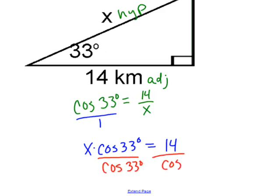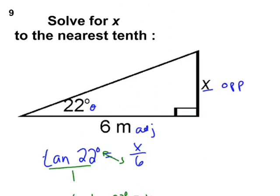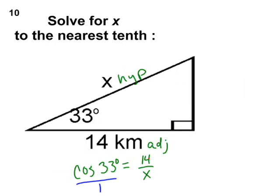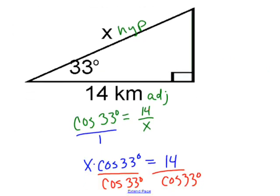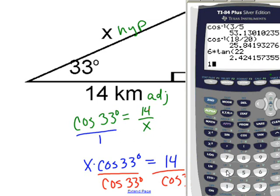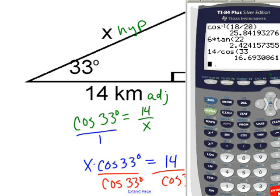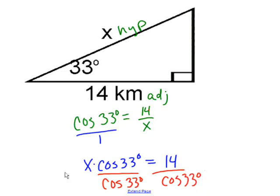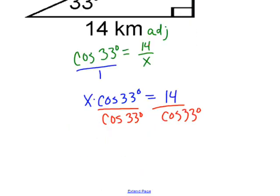After you get the hang of this, most of the time you can just realize that if x is on the bottom, I'm going to take my number and divide it by my trig. And if your variable is on top, you just take your number times your trig. So if I go to my calculator with this one, 14 divided by cosine of 33 equals 16.7, so my answer is x equals 16.7.